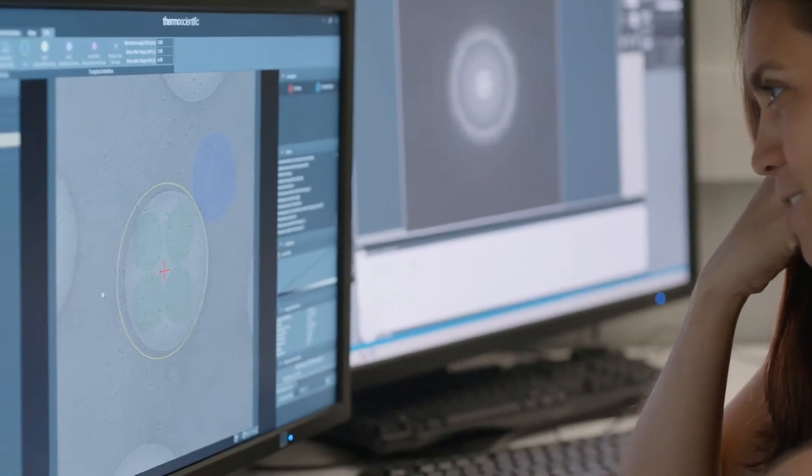Fringe-free illumination is an upgrade that Thermo Fisher developed for their microscopes so that their beam can effectively just be smaller without having some artifacts that are called fringing.